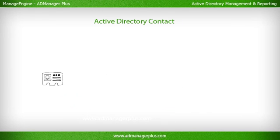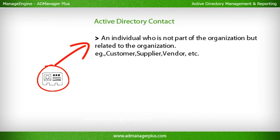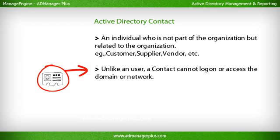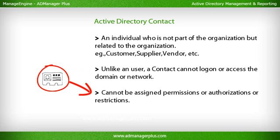An Active Directory contact is an individual who is not part of the organization but is related to it — for example, a customer, supplier, vendor, etc. Unlike a user, a contact cannot log on or access the domain or network, and cannot be assigned permissions, authorizations, or restrictions.